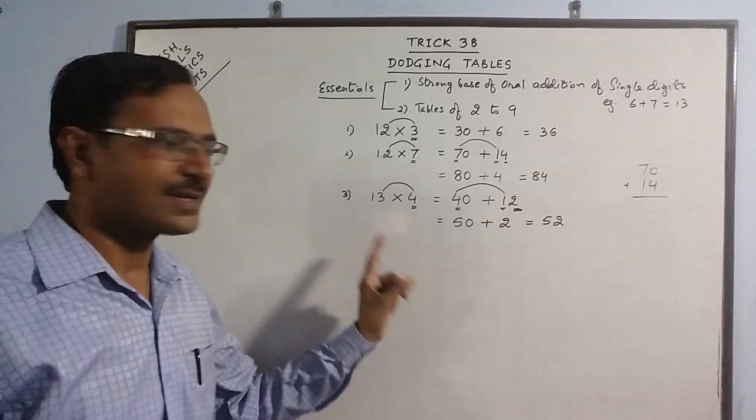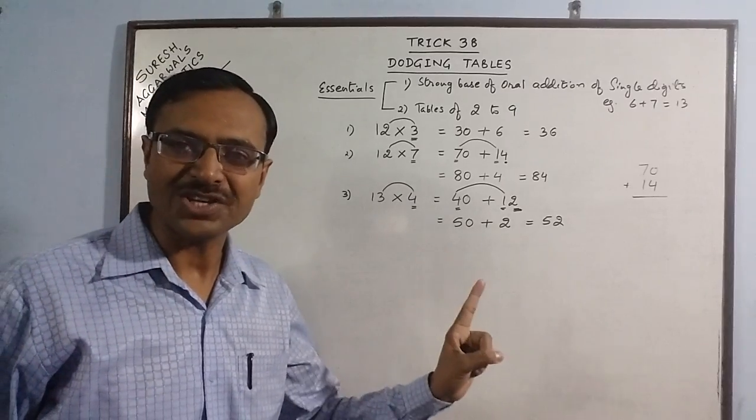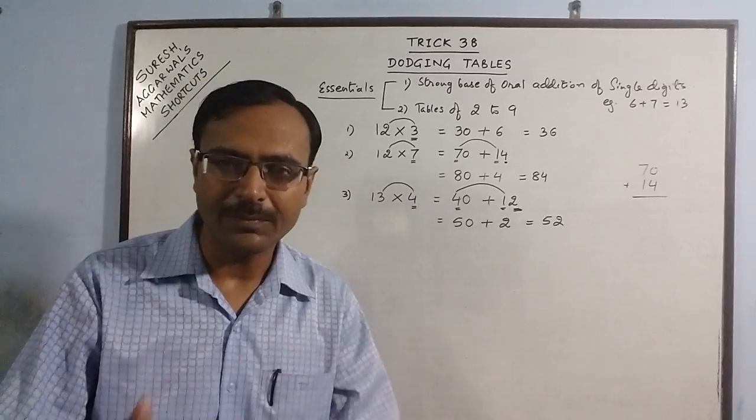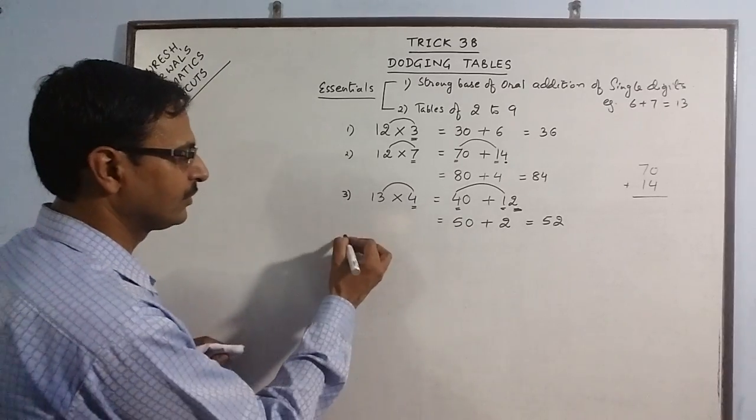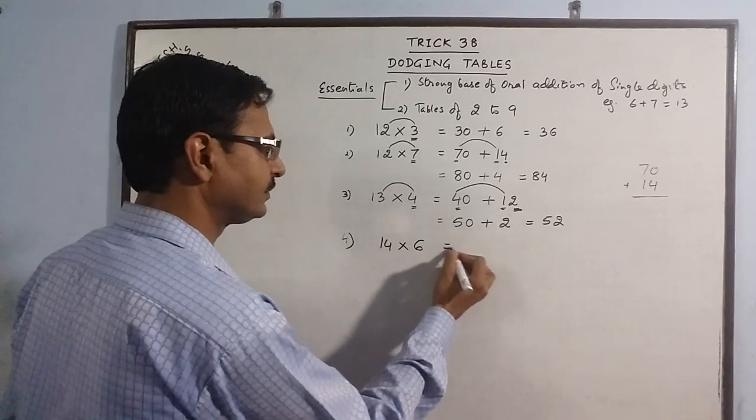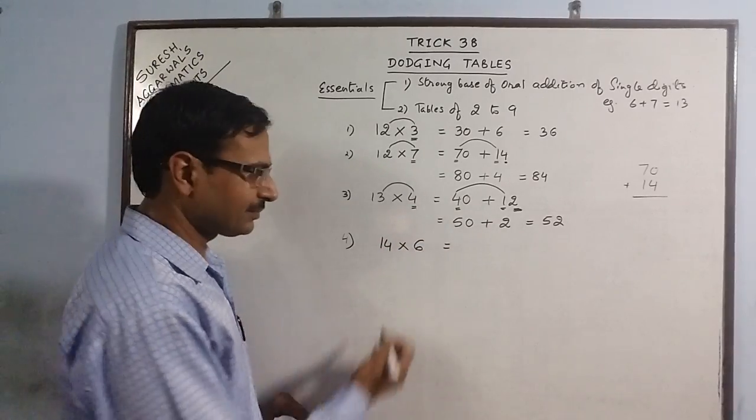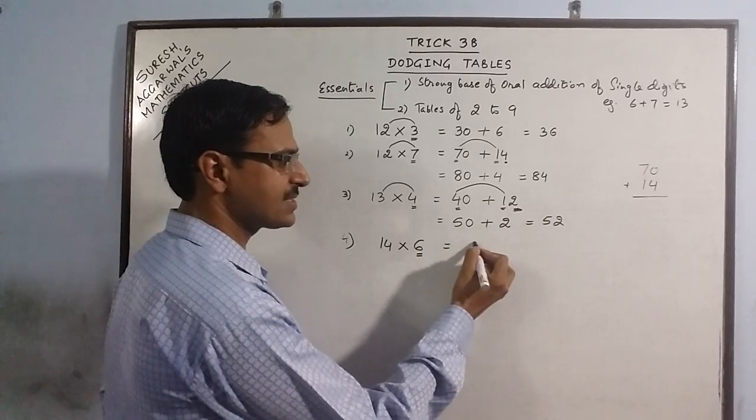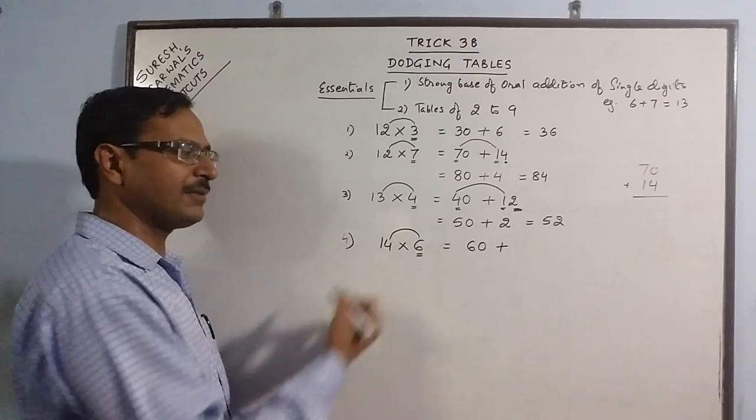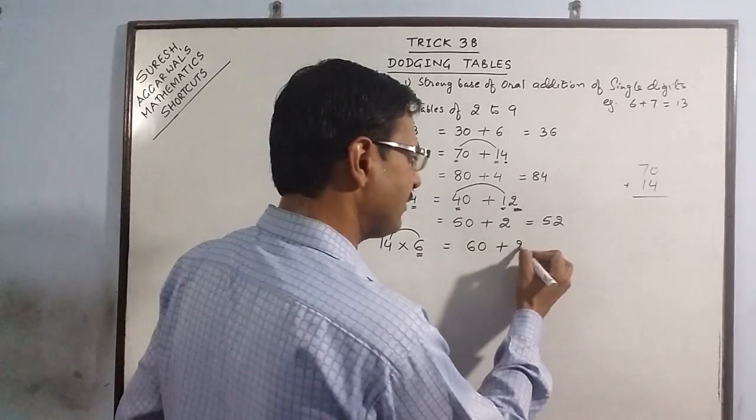10 minutes of practice of this concept will enable the child to write any dodging table up to 30. Let us take some bigger example. Say we have 14 into 6. This number is 6, so we put a 0 and we multiply the 6 by 4. 6 fours are 24.